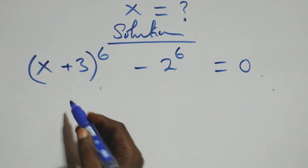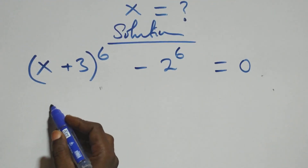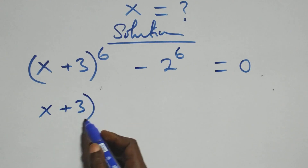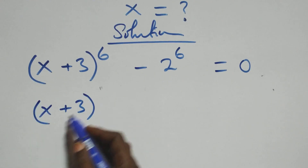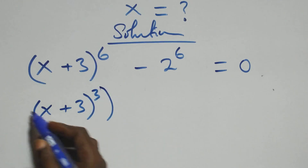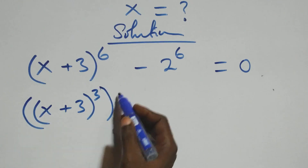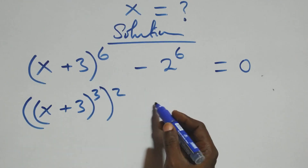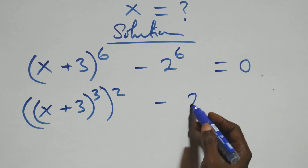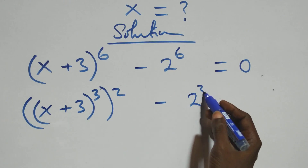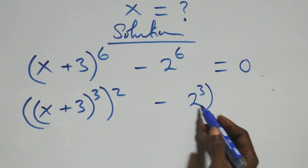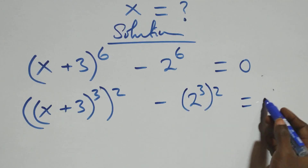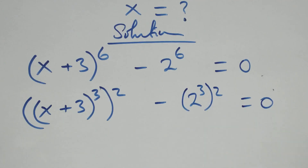Then here we can write this as x plus 3, all raised to the power 3, then all raised to the power 2 — as 2 times 3 here gives us 6 — and minus, also here we have 2 raised to the power 3, then all raised to the power 2, equals to 0 here.